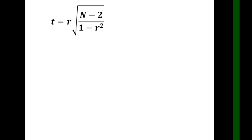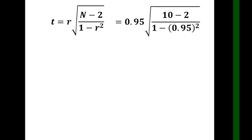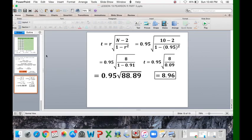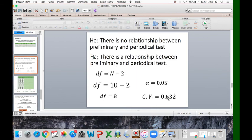Using the t-test formula with r=0.95 and n=10, we substitute into t equals r times square root of n minus 2 over 1 minus r squared. The computed t equals 8.96, which is clearly much higher than the critical value of 0.632. We therefore accept Hₐ and reject H₀. Conclusion: there is a strong positive relationship between preliminary and periodical tests for the 10 selected students.